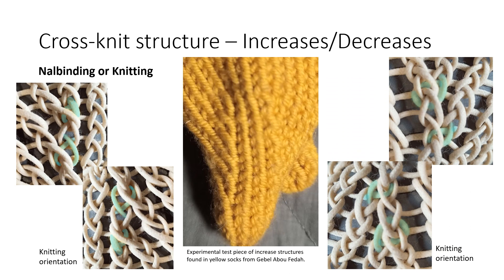Now, knoll binding can also produce increases that cannot be used as definitive markers of the technique. For example, the duplicative increase where the increased stitch connects to the previous row using exactly the same cross connection of the previous stitch. This produces the same structure as a twisted stitch knitting knit-two-together or slip-stitch-knit decrease, depending on direction. This increase has also been found in historical examples, such as one of the pairs of socks found in Gebel Abu Fedda in Egypt, which was art historically dated to the 5th to 8th century CE.